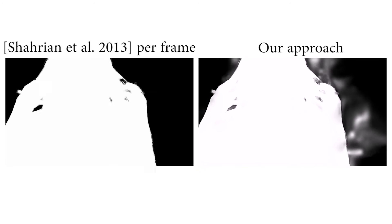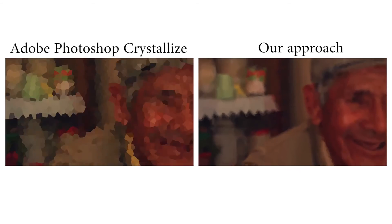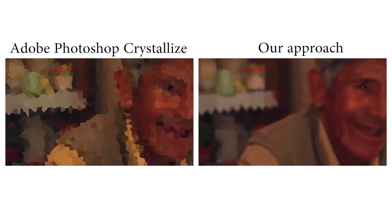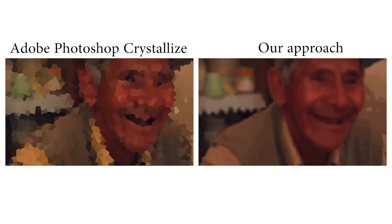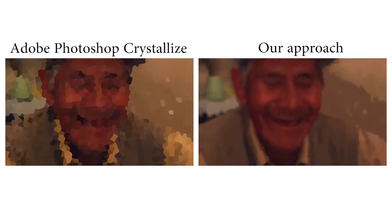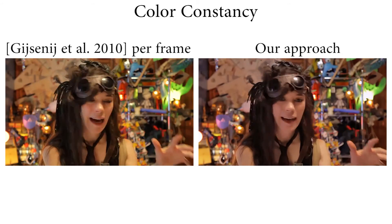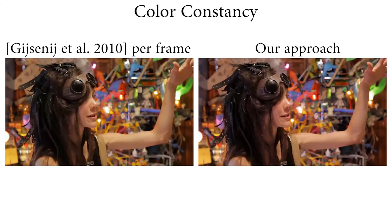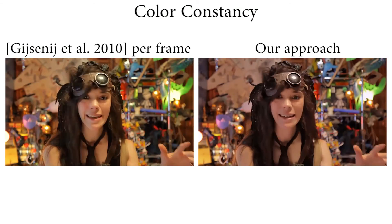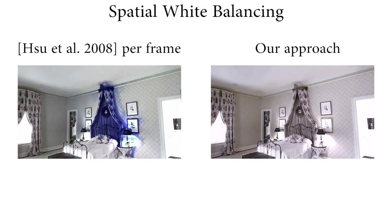As we just saw, our approach has limits. Matting remains inconsistent because flow fails often at matting edges, leading to bleeding. Painterly filters, which create new edges, also fail as the output video becomes inconsistent with the input. That said, our approach does apply to a diverse set of operators, ranging from colour constancy to local white balancing and even to depth prediction.